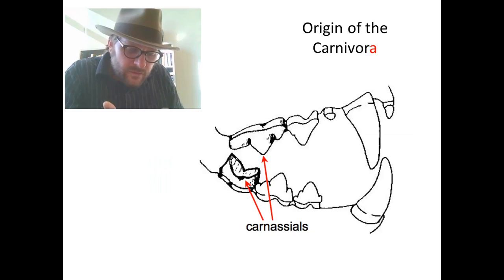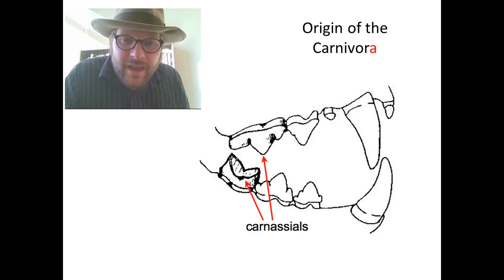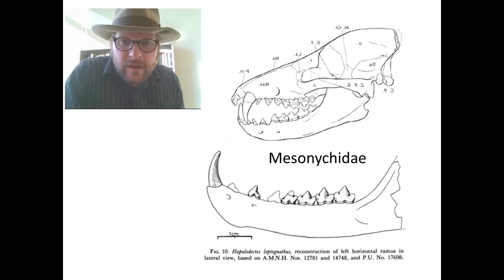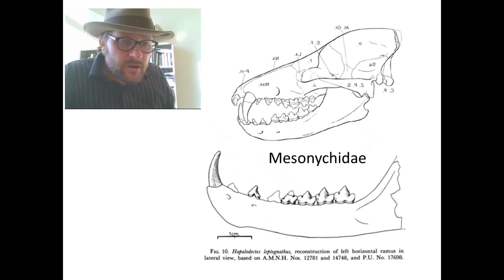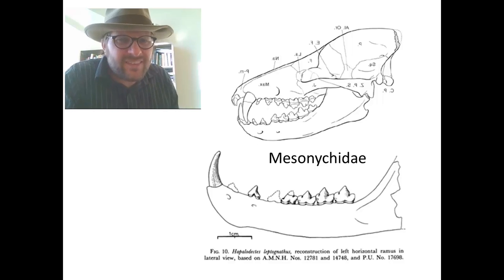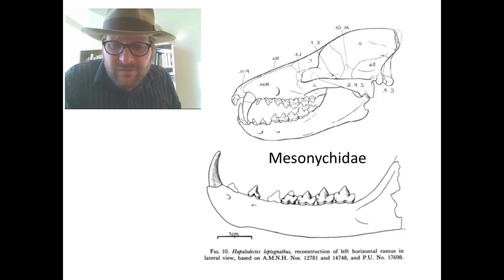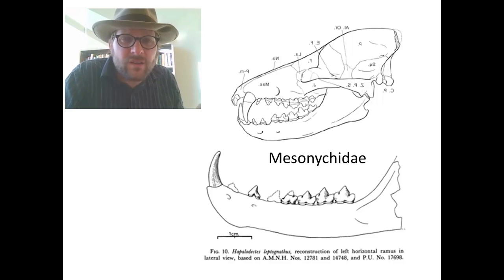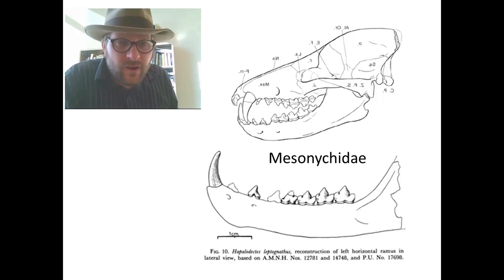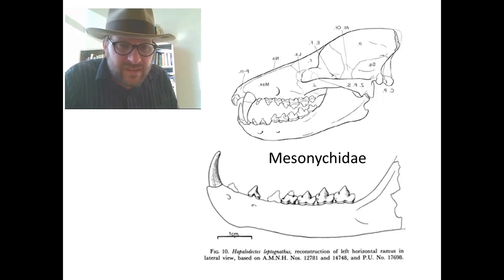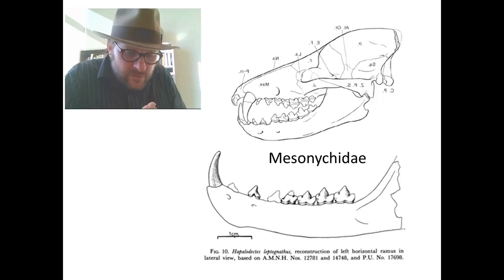This is unique to many different groups, but Carnivores have developed this interesting way of slicing their teeth together like scissors to cut through tough meat and tendons, so it's a dietary specialization that unites Carnivora. These scissor-like teeth are called carnassial teeth. Now Carnivora, the order, is not the only group to have carnassials. In fact, in the fossil record, there are lots of different groups of carnivorous mammals that developed scissor-like teeth.